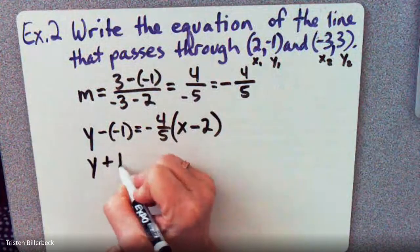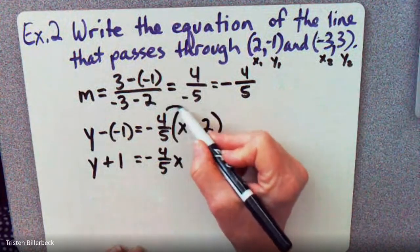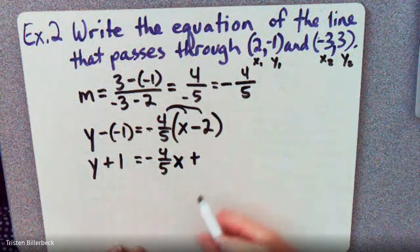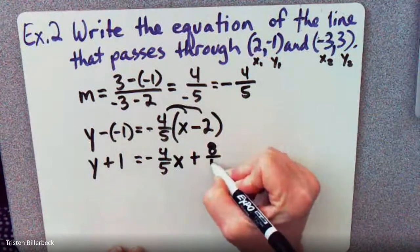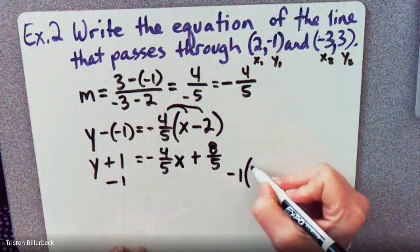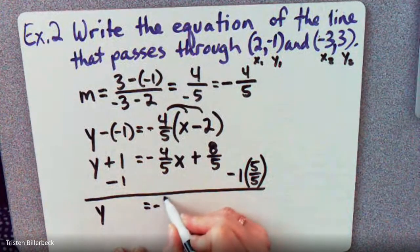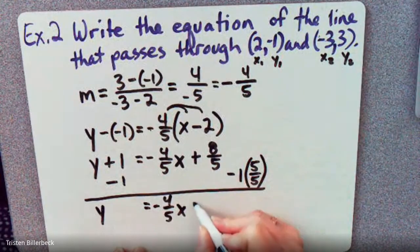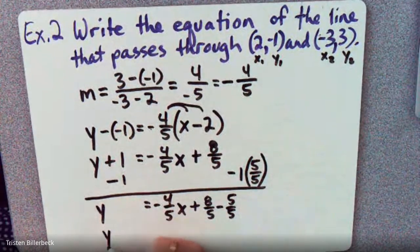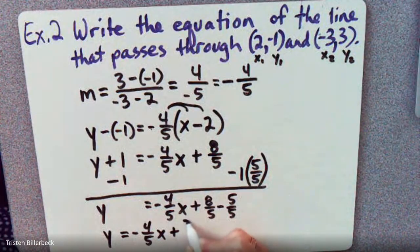So we have Y plus 1 equals negative 4 fifths X. Now if we distribute this to both terms — remember a negative times a negative is a positive, so please do not forget to distribute the negative — so 4 times 2 is 8 fifths. So now let's subtract 1 from both sides and make this 1 equal to 5 over 5. So we get Y equals negative 4 fifths X, and we have plus 8 over 5 minus 5 over 5.